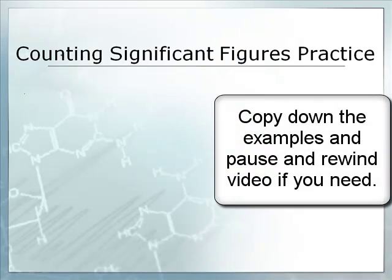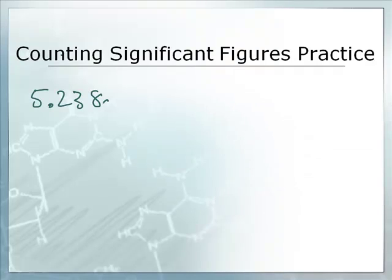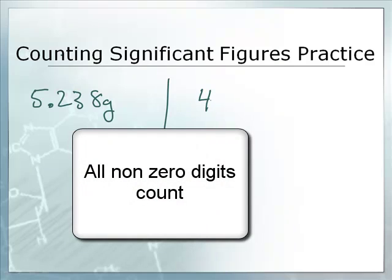So let's see if we can count significant digits. Let's say I have 5.238 grams. How many significant figures are there? Well, those are all non-zero digits, so all of those count as significant figures. There's a 5, a 2, a 3, and an 8. That would be 4 significant digits. That's pretty easy.